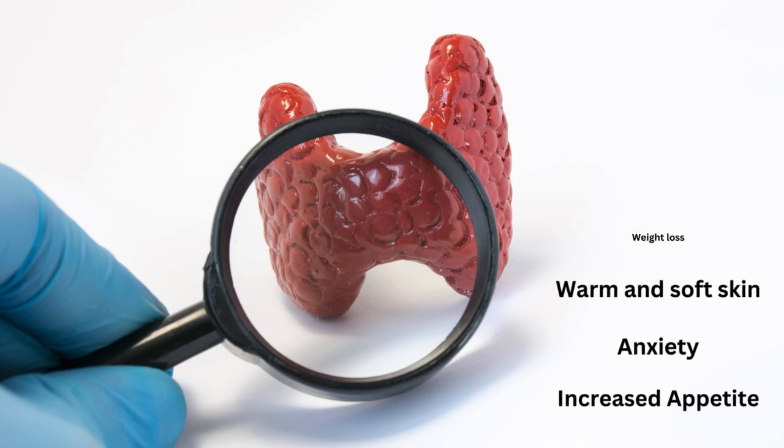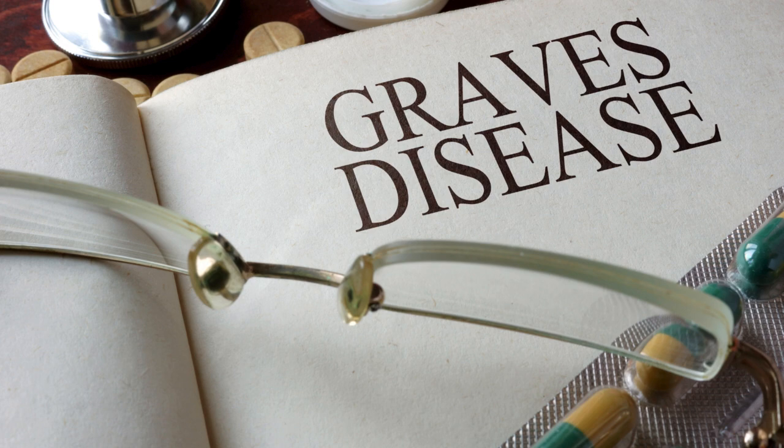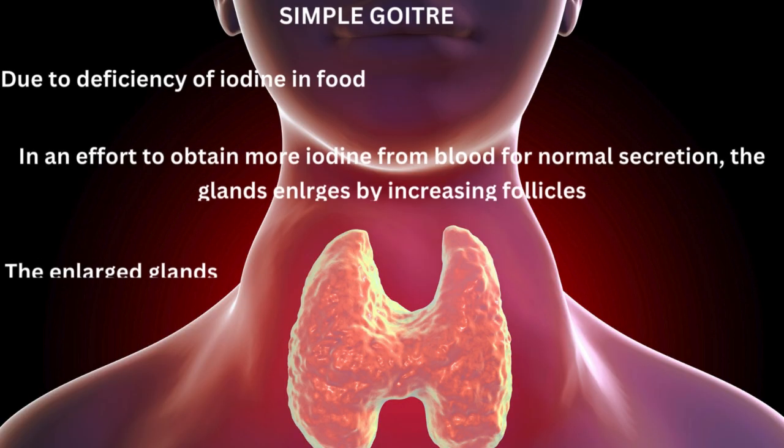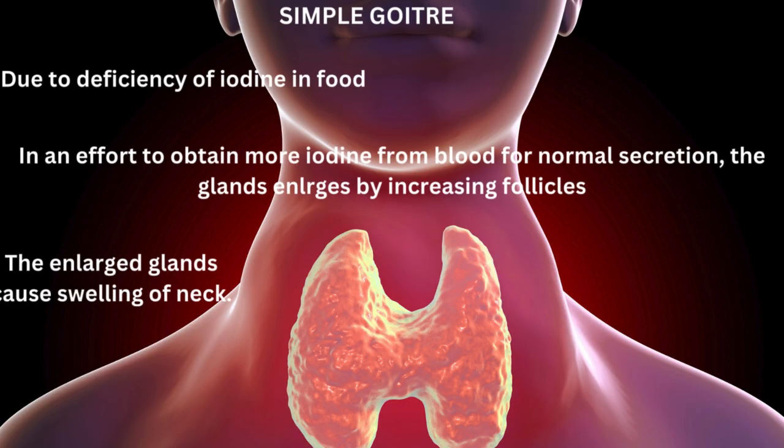You may have heard of Graves' disease, also called goiter disease. Due to this, there is protrusion of the eyeballs caused by accumulation of mucus in the eye orbits. This is mainly due to hyperthyroidism.